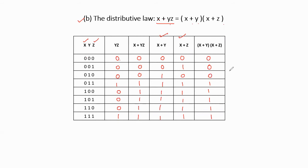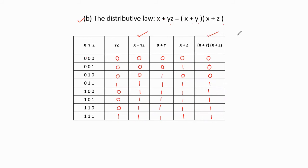We check the LHS and RHS of this identity. Yes, these two values are equal, meaning the second identity is also verified with the help of the truth table.